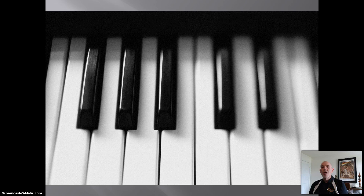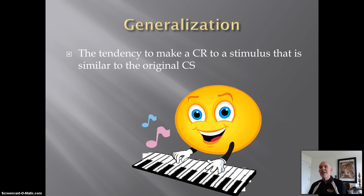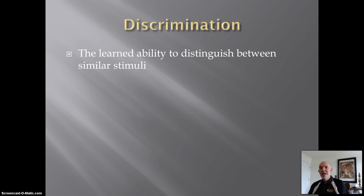Pavlov, in other experiments, would condition dogs to salivate to middle C on a piano like this one here. He would then play a B or a D, which are each one tone away from C — and the dog would salivate. He explained this as stimulus generalization: the tendency to make a conditioned response to a stimulus that is similar to the original CS. Pavlov would then continue acquisition training to middle C but never pair food with the tone B or D. This is called discrimination training, defined as a learned ability to distinguish between similar stimuli so that the conditioned response only occurs to the original conditioned stimulus, but not to similar stimuli.